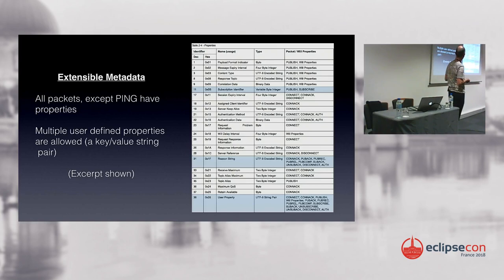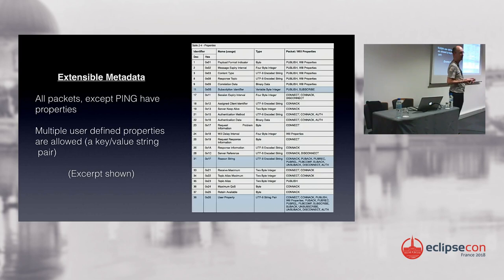Every packet now has a set of properties added since version 3.1.1. These properties are used for lots of different features in version 5. We also have user properties for whatever you want to send from client to server or server to client. And if the reason code isn't enough to tell exactly what went wrong, you can enhance that with a reason string.